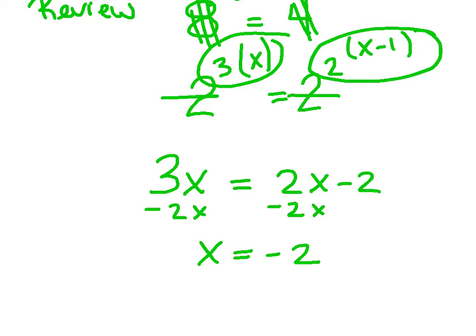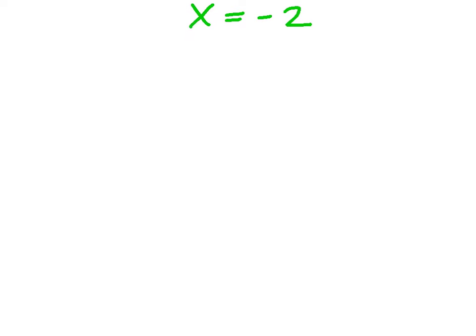So that's what we did last week. We tried to get these exponential equations to have a common base. Well, unfortunately, not all exponential equations can be expressed in terms of a common base. Let me give you an example where that's certainly not going to happen. Let's say 5 to the x equals 7. It's not even possible to get a common base. So what the heck are we going to do?